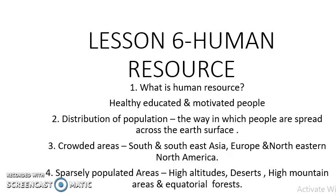What do you mean by distribution of population? Distribution of population means the way in which people are spread across the earth's surface. We can see that more than 90% of the world's population live in about 30% of the land surface. So the distribution of population in the world is extremely uneven — it is not equal.